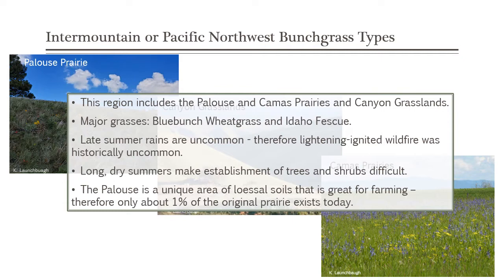Fire would take care of the shrubs and keep them at bay, allowing the grasses to flourish. Those long dry summers also help suppress shrubs, because a shrub might start growing and then hit July — and as you know from living in Moscow, there's very little rain from about the end of June all the way through October. So if a shrub or tree got established, it might make it to a small seedling stage and then has to survive that really long dry period. Two things keep this a grassland: that long dry period and occasional fire.